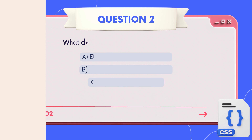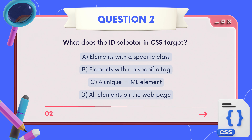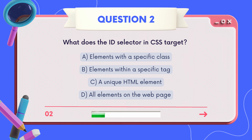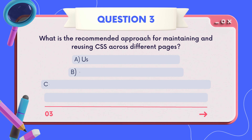Moving on to question two: what does the ID selector in CSS target? A) elements with a specific class, B) elements within a specific tag, C) a unique HTML element, D) all elements on the web page. Time's ticking — choose your answer. The correct answer is C: a unique HTML element. Great job if you nailed it!